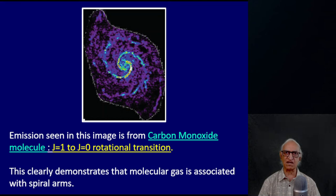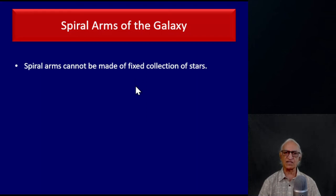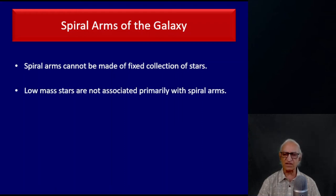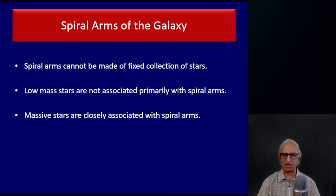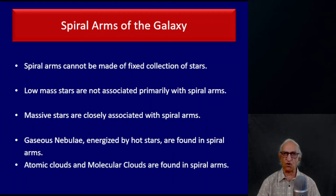Let me summarize. Low-mass stars are not necessarily associated with spiral arms, but the massive stars, the molecular clouds, and the dust clouds are indeed associated with spiral arms. To recap: spiral arms cannot be a fixed collection of stars because they would wind up every time the galaxy rotates. Low-mass stars are not primarily associated with spiral arms. Massive stars, gaseous nebulae illuminated by ultraviolet radiation from massive stars, atomic clouds seen in 21-centimeter emission, and molecular clouds seen in infrared and millimeter wave radiation — all are found in spiral arms.